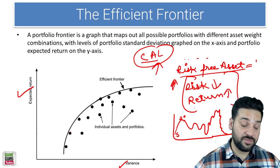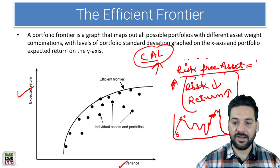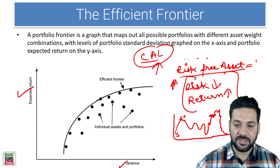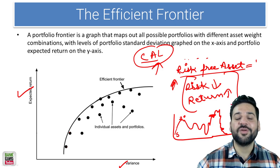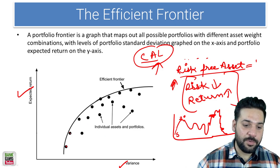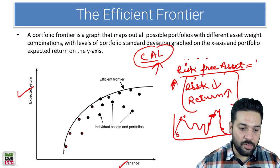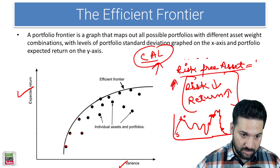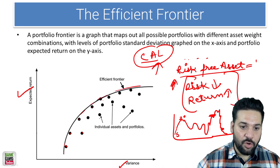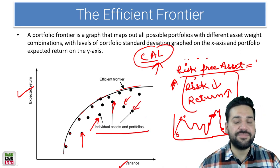So wherever there is a large amount of risk, we need more returns. Let's say you buy an asset here and now you want to sell it at this position. So what we are doing here is plotting all the assets. We draw this curve — all these individual assets and combinations of assets, they are inefficient.